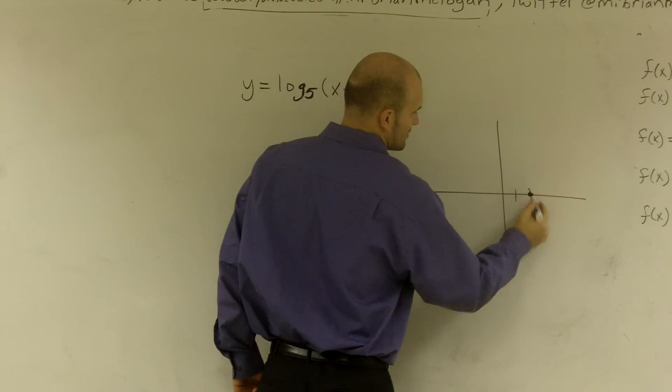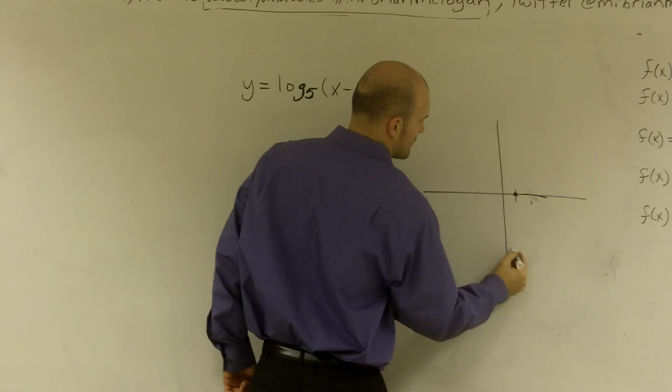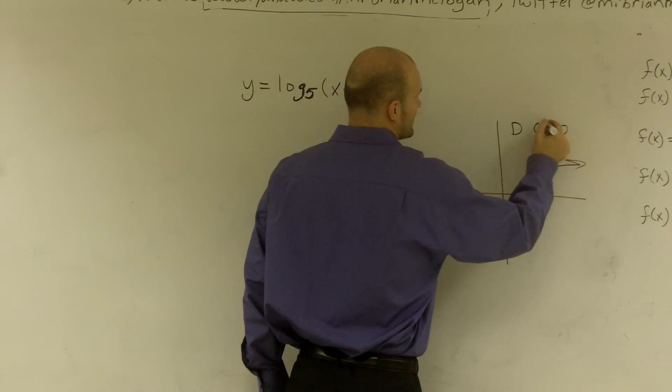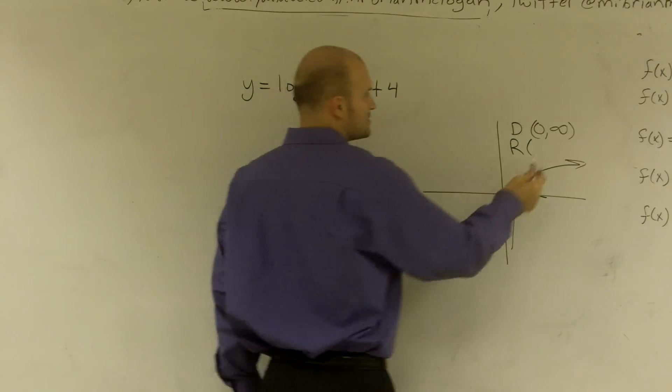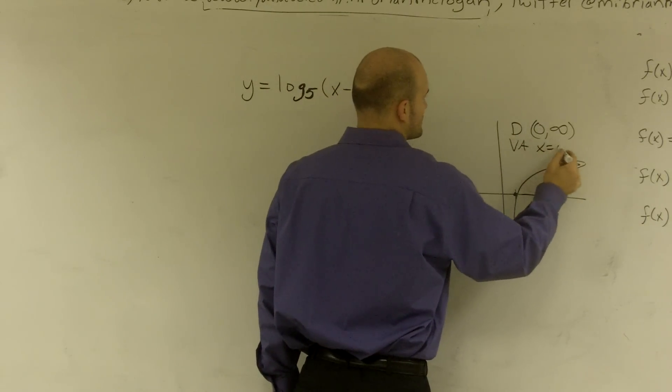we know that the graph crosses at (0, 1). It looks something like this, where my domain is from 0 to infinity, and my vertical asymptote is when x equals 0.